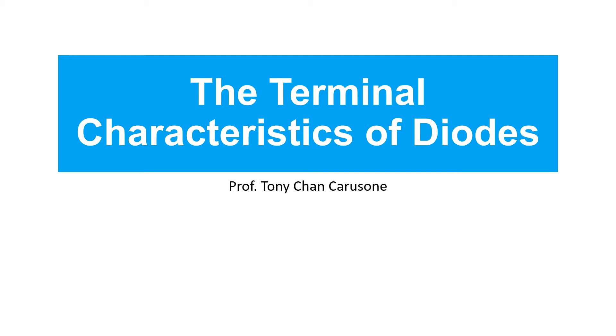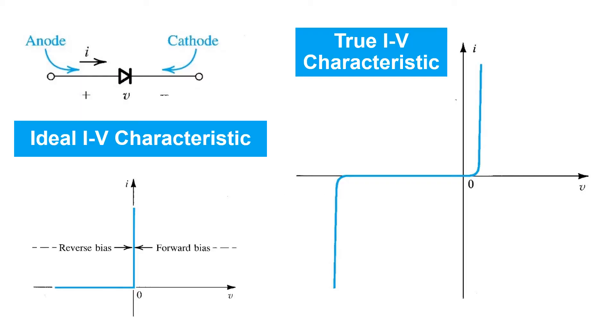In this video, you'll learn about the terminal characteristics of diodes. We've already discussed the ideal I-V characteristics of the diode, pictured here, where we broke up the characteristic into two distinct regions of operation: reverse bias, where no current flows, and forward bias, where no voltage drop appears across the diode.